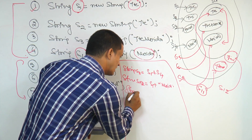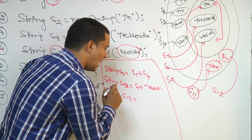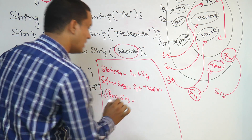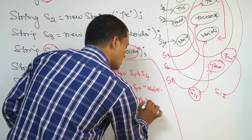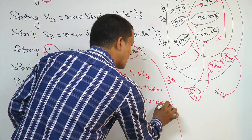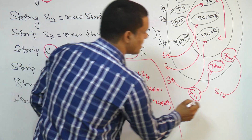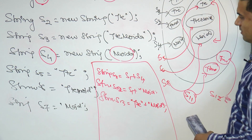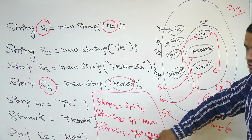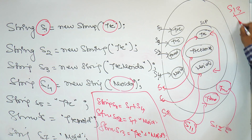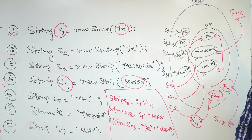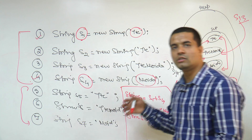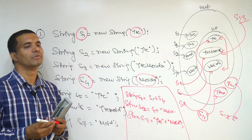Next, when I write S13 = "JTC" + "Noida", that is literal plus literal concatenation. In this case, S13 will always point inside the String Constant Pool. So the result "JTC Noida" is already available in the pool, and S13 points to it. This is how all processes work in the case of string literals.